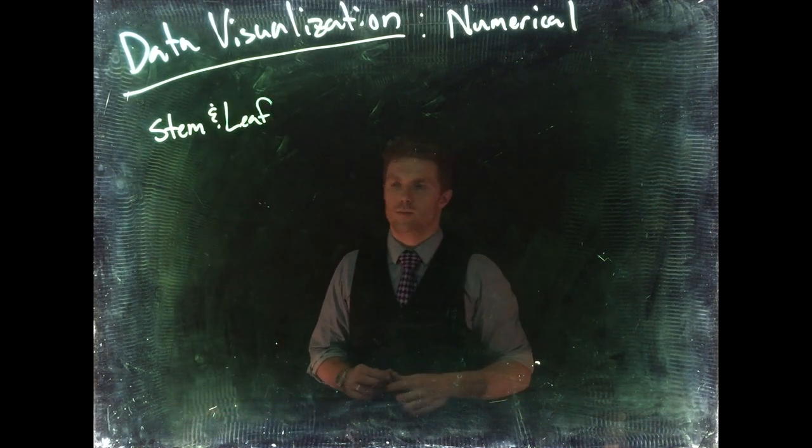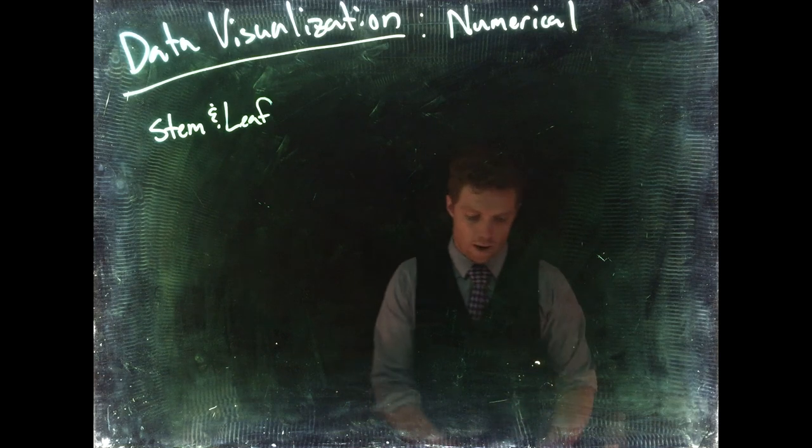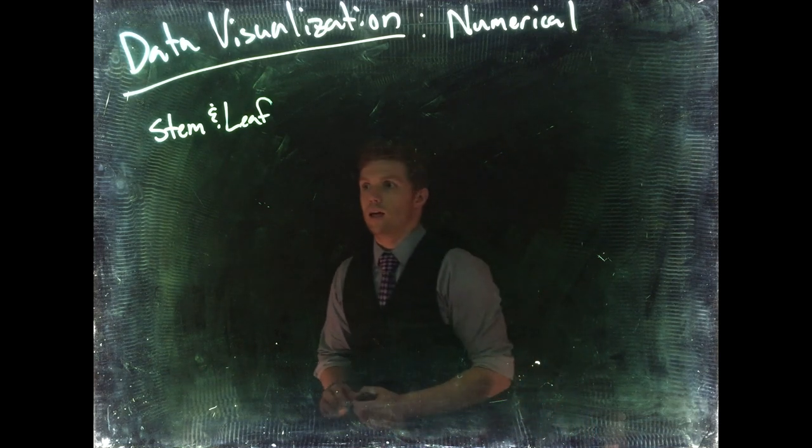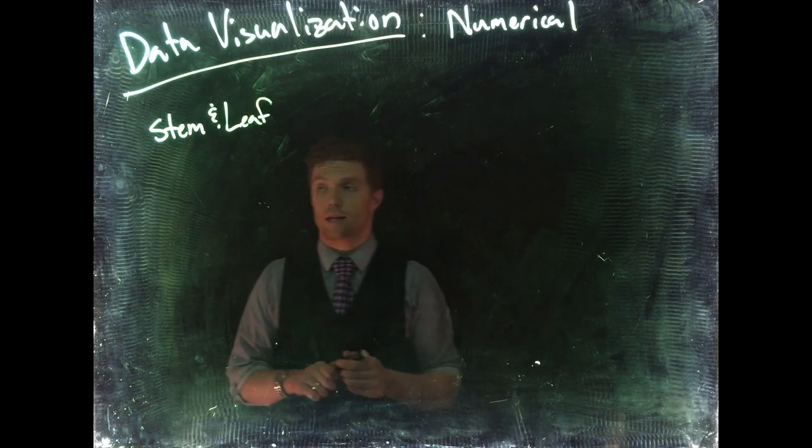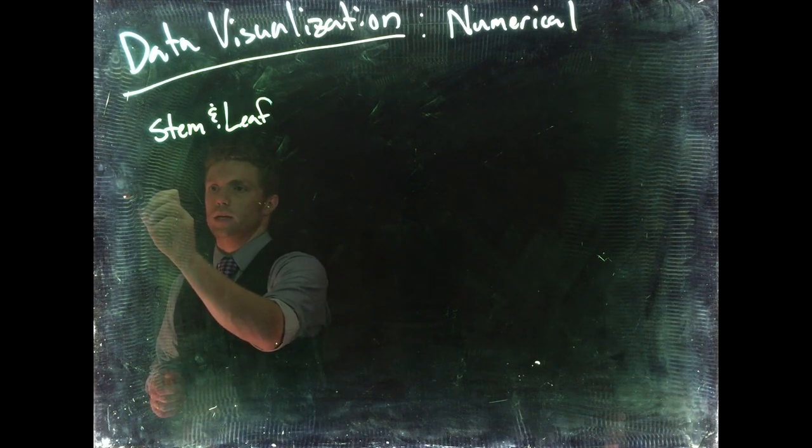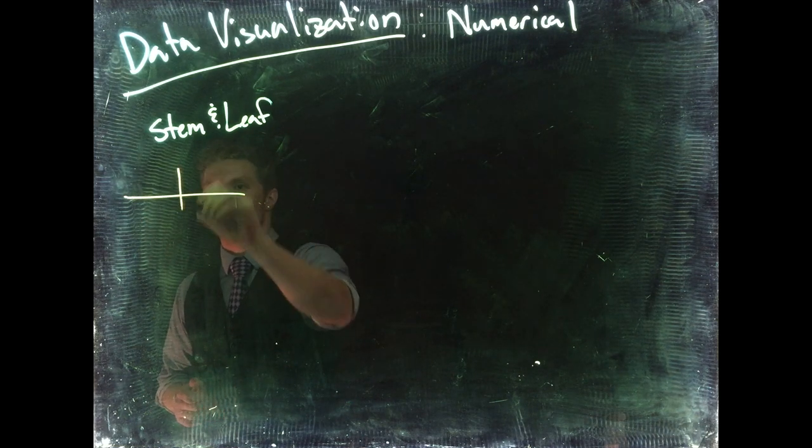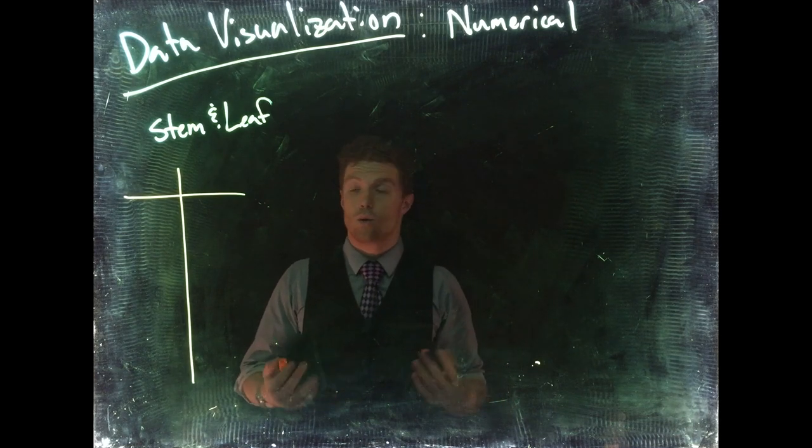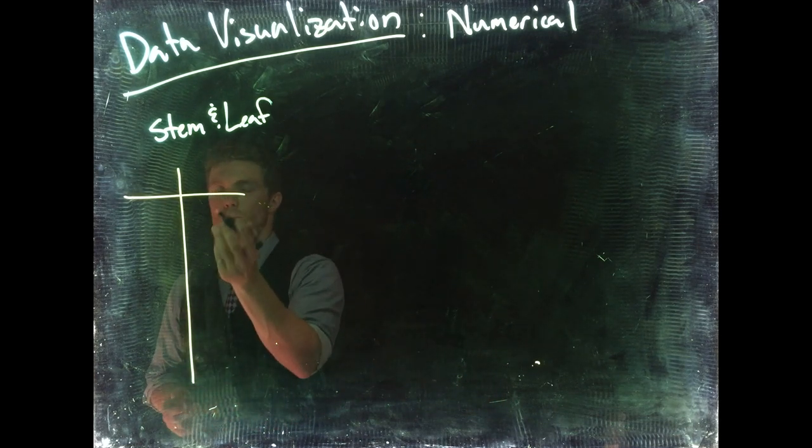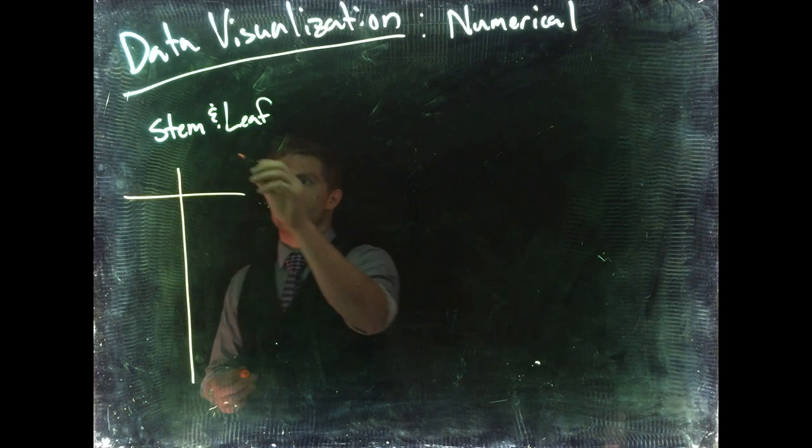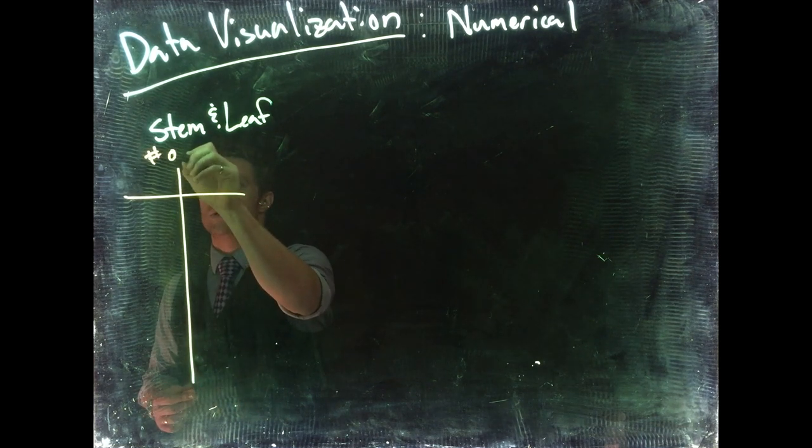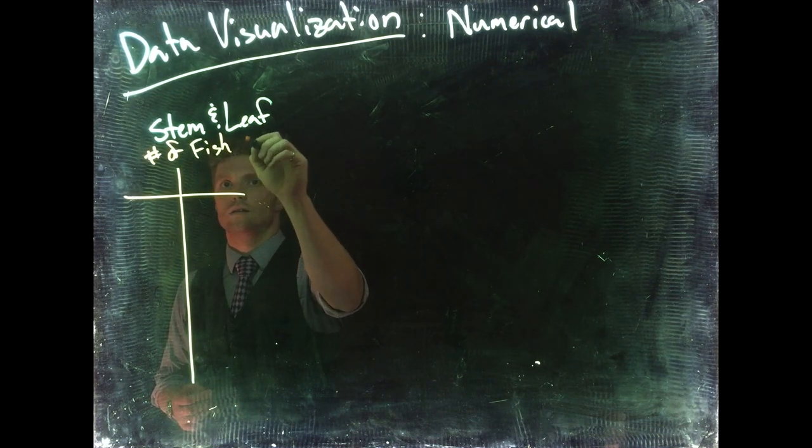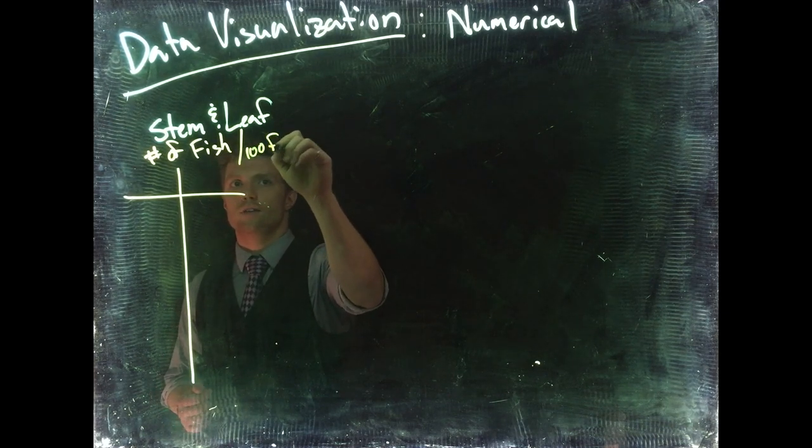I don't want to spend a lot of time on it, but it's important to be able to recognize it so you can understand what it can be used for. This is used a lot more than before we had computers. So assuming this is a way that we can see and organize our data, let's say that we are measuring the number of fish per 100 feet.